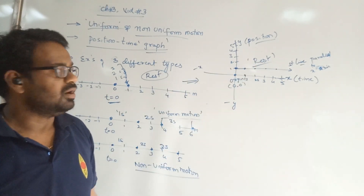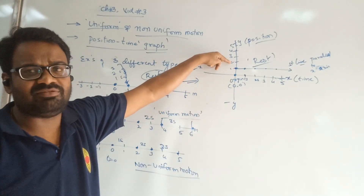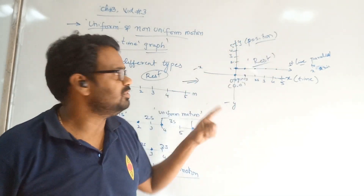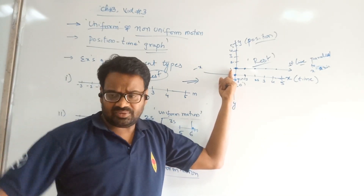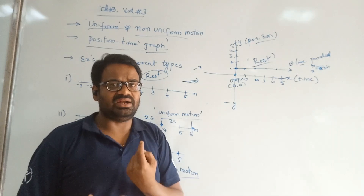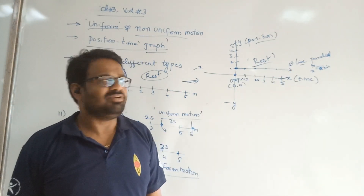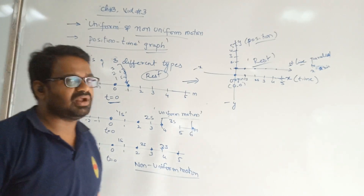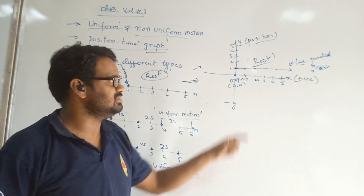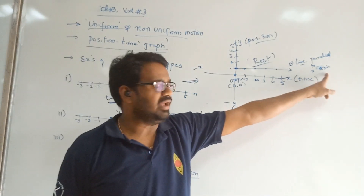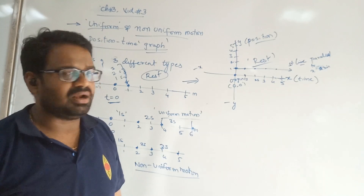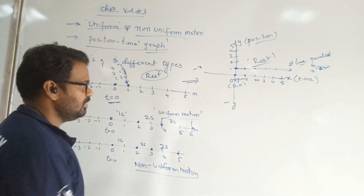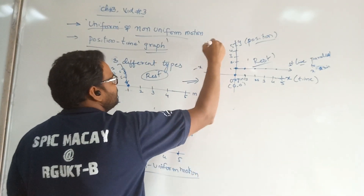Depending upon the position where the object is, the line may be at 2 meters away from you or 3 meters — it is at rest regardless. If a book is at 1 meter away from me and at different time intervals it remains at 1 meter, I get this line. If that book is 10 meters away, I will get the line higher up. The position-time graph of a body at rest is a straight line parallel to the time axis, also called a horizontal line.